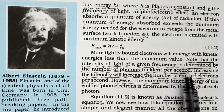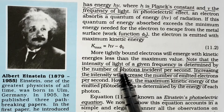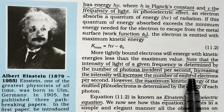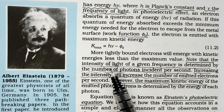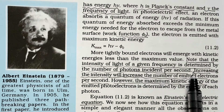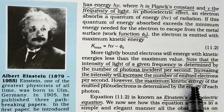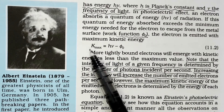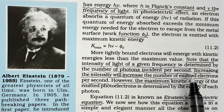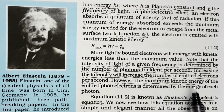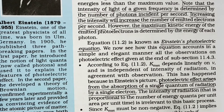Now we define intensity in this quantum picture. Intensity means the number of photons incident per second — that is, the number of photons striking the surface per second. If the number of photons striking the surface per second increases, then the number of electrons emitted per second increases, which means the photoelectric current increases.